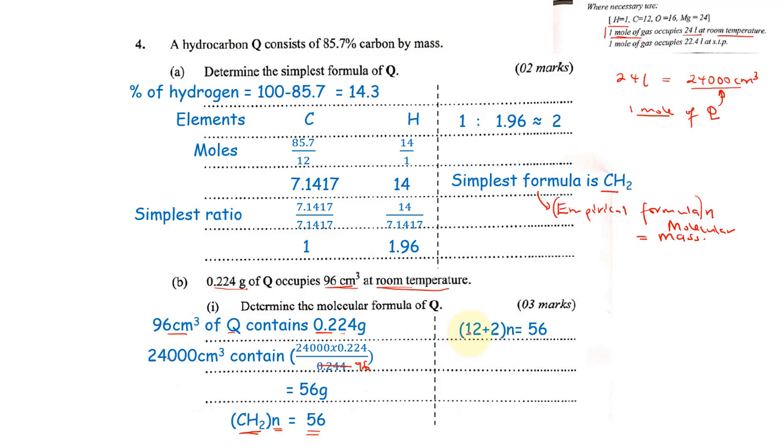We are multiplying the empirical formula times a certain number to be equivalent to the molecular mass. We know that carbon, we have one atom, 12 times 1, plus hydrogen, 1 times 2, times n equals 56. We shall get our value of n as n equals 4. So if n equals 4, we shall substitute it here and get the actual molecular formula. So the molecular formula becomes C4H8. This becomes the molecular formula of Q.